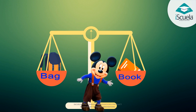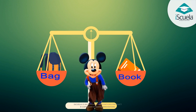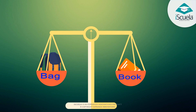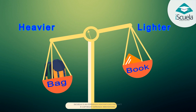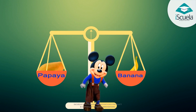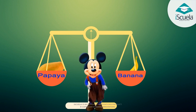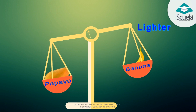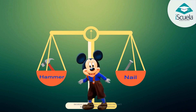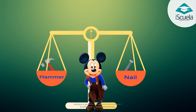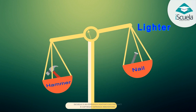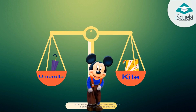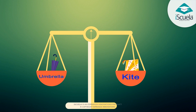Which is heavier? Which is lighter? Look and tell. Bag is heavier. Book is lighter. Banana is lighter. Papaya is heavier. Nail is lighter. Hammer is heavier. Which is lighter? Which is heavier? Look and tell. Kite is lighter. Umbrella is heavier.